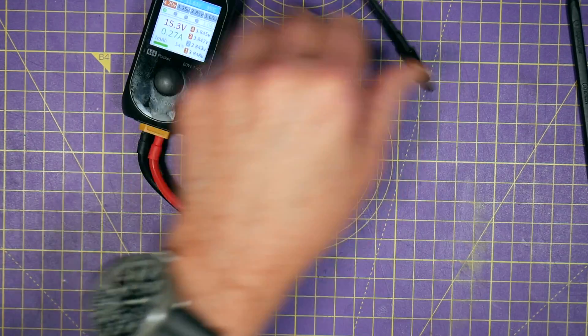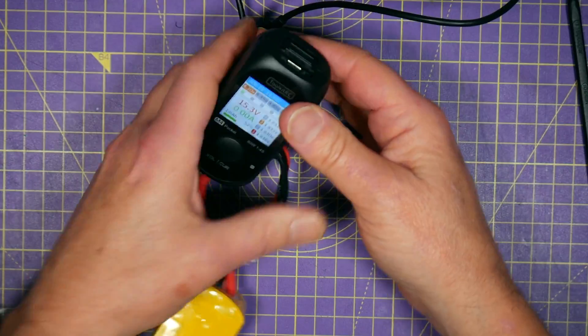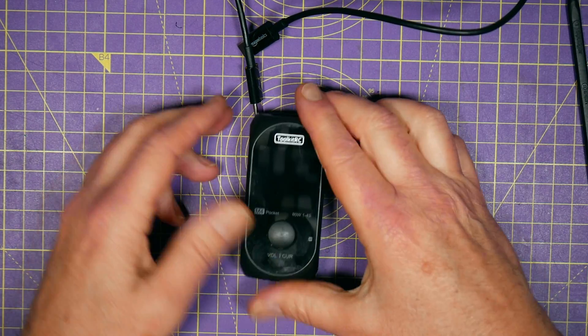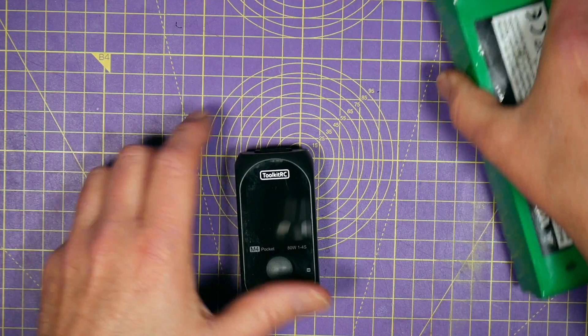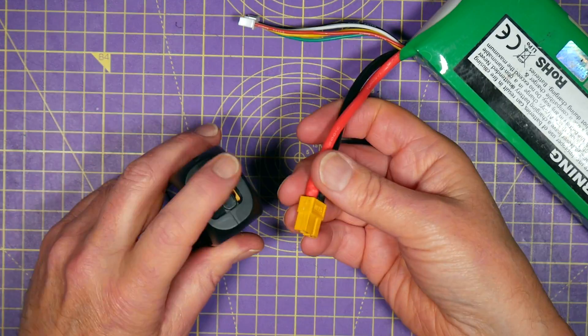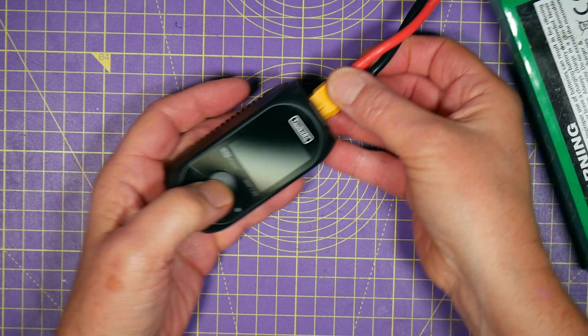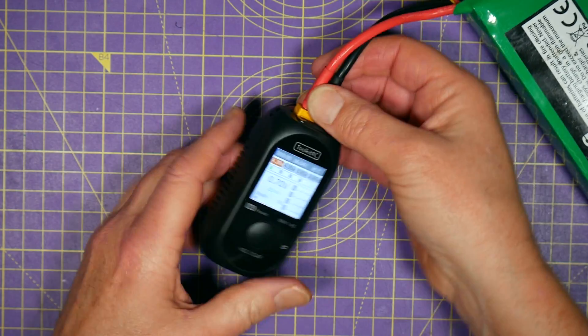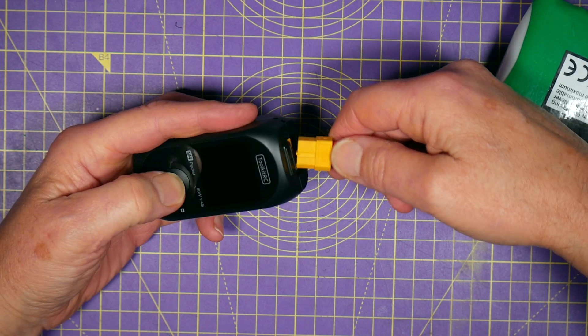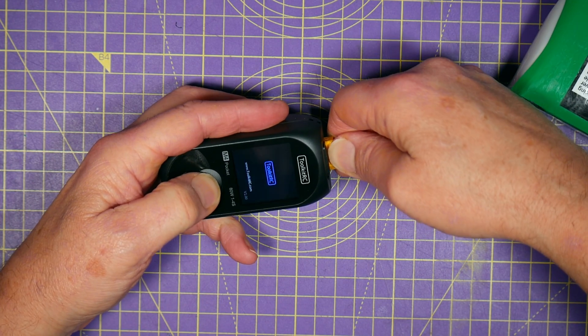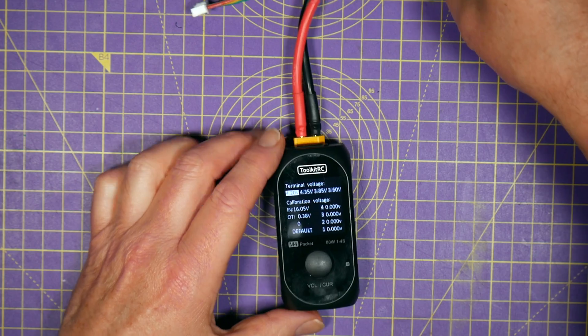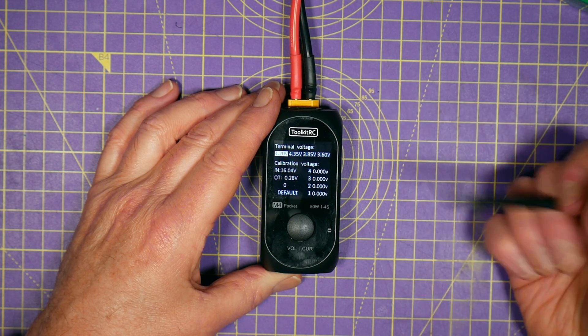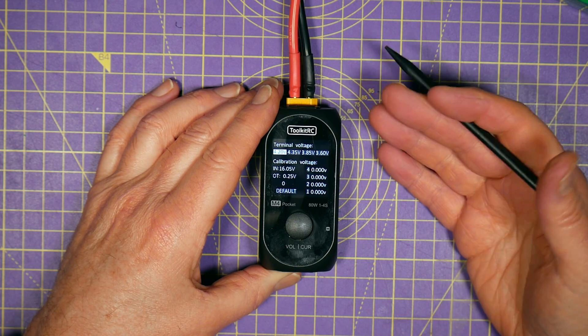And on here, as I said, there are preset voltages and currents. Now, you may want to change those. That's easy enough. What you do is you connect power onto here while holding the charge button. Press it down, plug it in. And you get to this setup page.